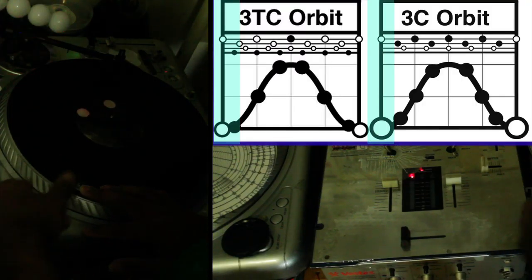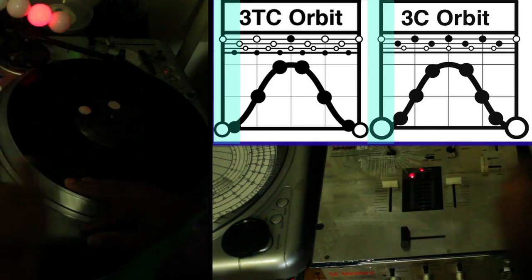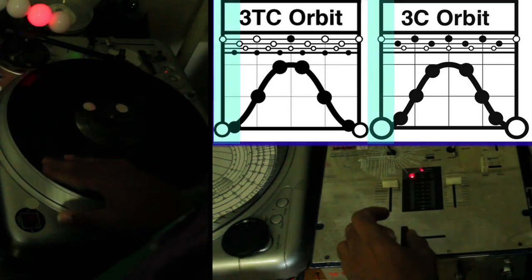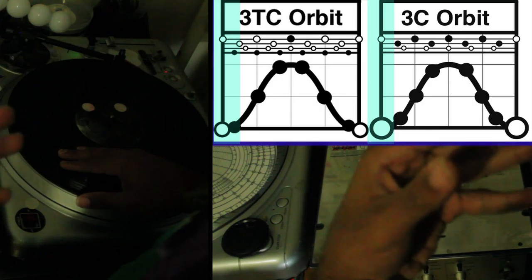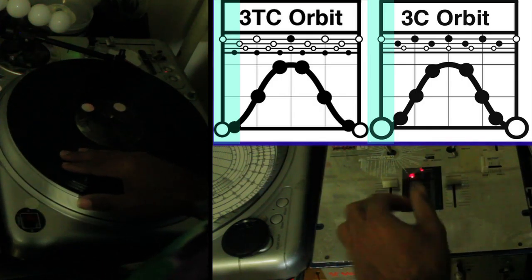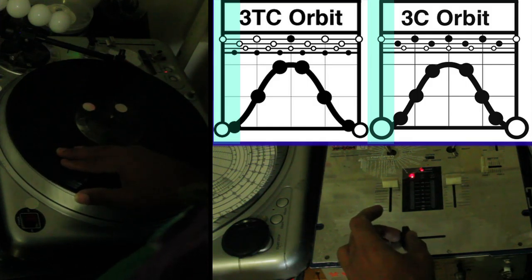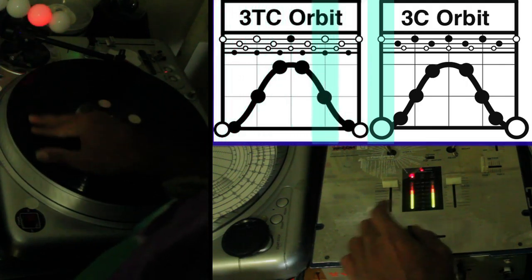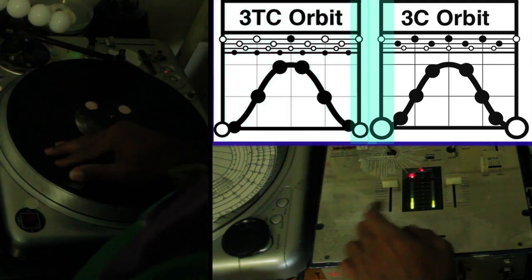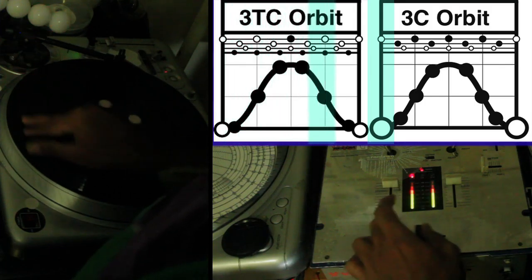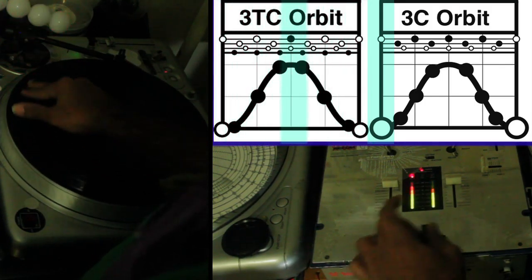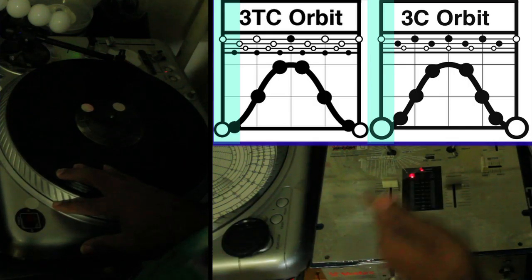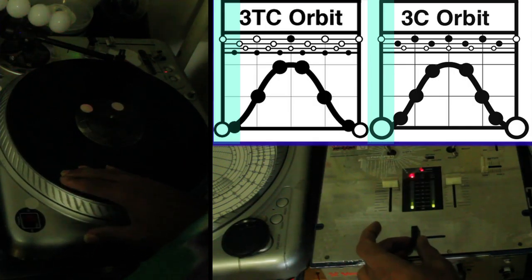So we're going to do two variations of three-click orbits, which can also be called three-click flares. It's about five o'clock here on the 5th of December in Brooklyn — it's very dark already, so I'll just enhance the light in the computer. Here's the first variation — a triplet three-click flare. I just started doing these, so I'm still learning them. Those clicks are evenly spaced apart.